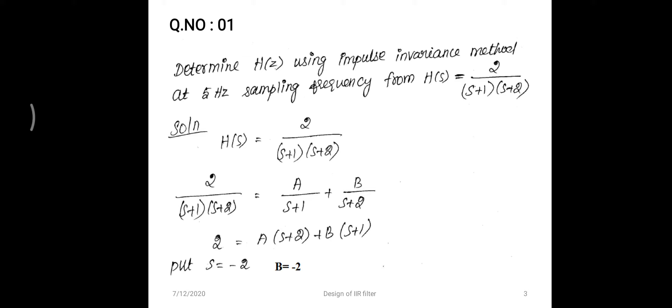Consider question number one: determine H(z) using the impulse invariance method at 5 Hz sampling frequency, given H(s) = 2 / ((s+1)(s+2)). We have to convert this analog transfer function into a digital transfer function using the impulse invariance transform method. The sampling frequency is 5 Hz, so the sampling period T = 1/5 = 0.2 seconds.